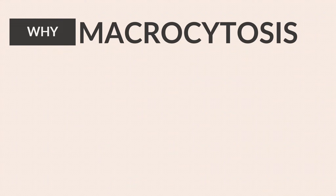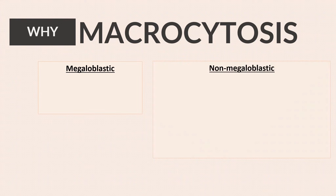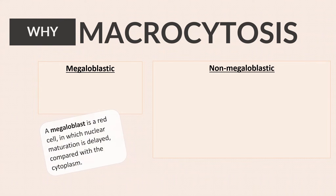What are the causes of macrocytosis? Causes can be divided into megaloblastic and non-megaloblastic. But what is a megaloblast? A megaloblast is a cell in which nuclear maturation is delayed compared with the cytoplasm. This occurs with vitamin B12 and folate deficiency, both of which are required for DNA synthesis.